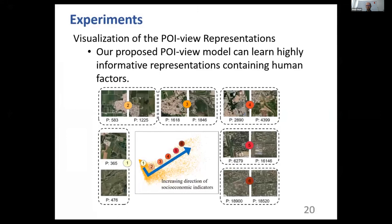We see the population also increases from anchor point 1 to 6. Therefore, we can conclude that our proposed POI view model can learn highly informative representations containing human factors from unlabeled satellite images.